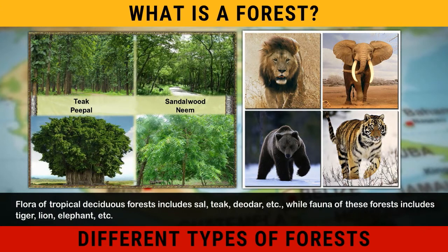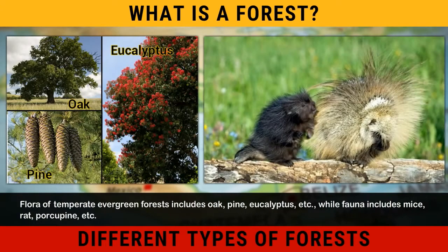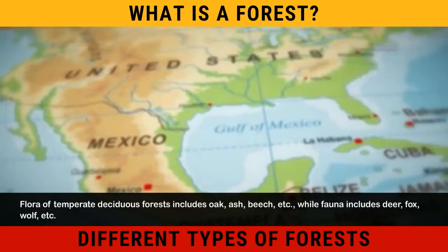Flora of temperate evergreen forests includes Oak, Pine, Eucalyptus, etc. While fauna includes Mice, Rat, Porcupine, etc.